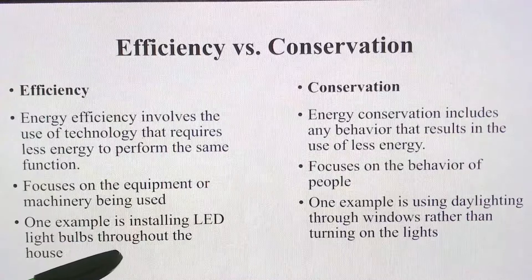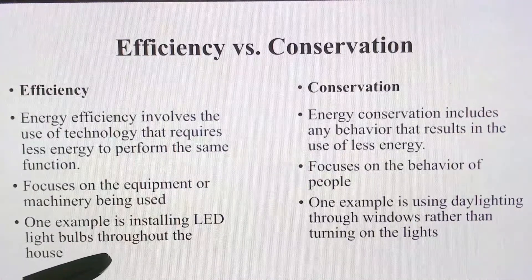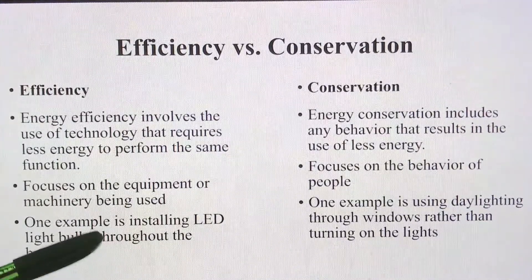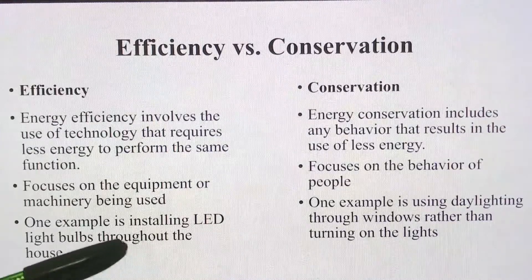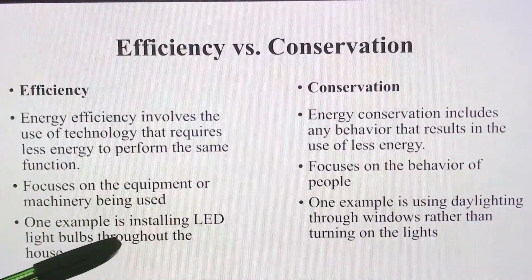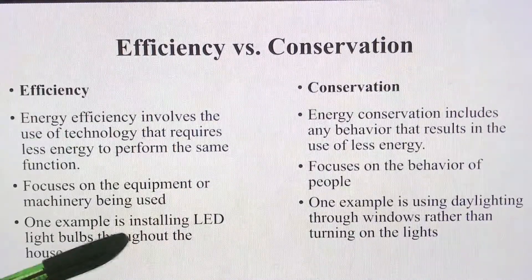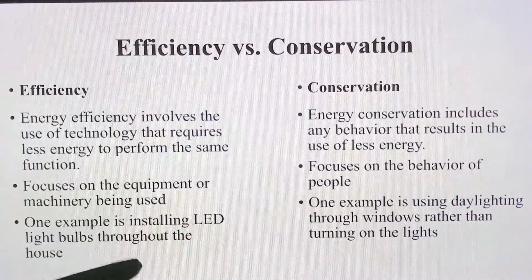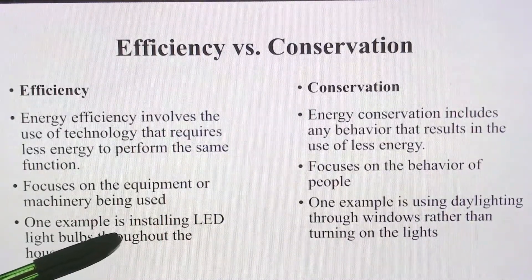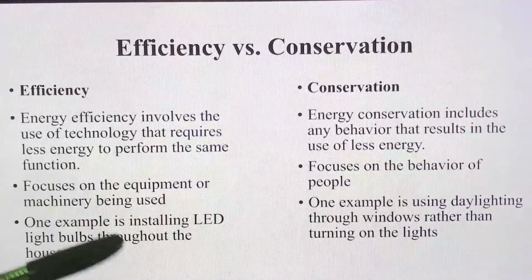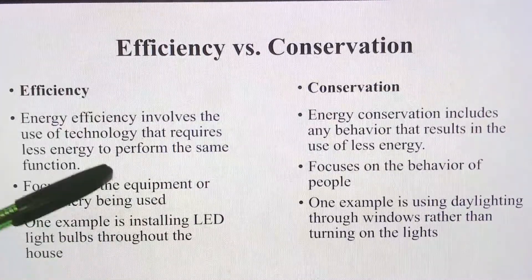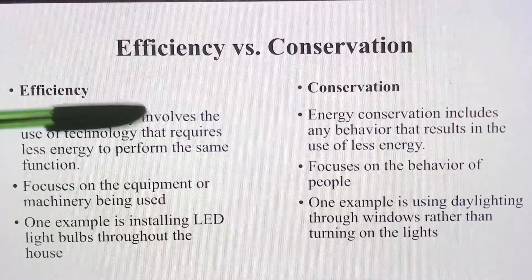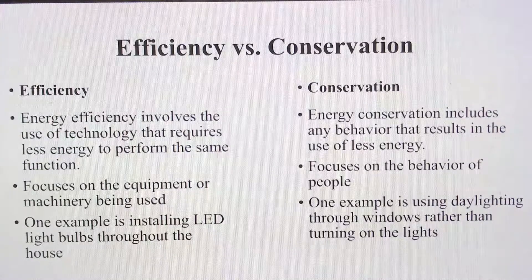Another example is installing LED light bulbs throughout the house. If you replace the old incandescent lamps with LED lights, it will use less energy and give more output. LED lighting is also environment friendly. These are the main things to keep in mind when you focus on efficiency.